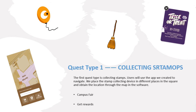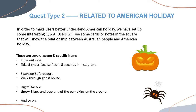Here is Quest Type 1. The first major task of our app is collecting stamps. Users will use the app to navigate, and we place the stamp-collecting devices in different locations around the square. Other coordinates such as restaurants, toilets, and parking are also displayed on the map to facilitate users. After collecting all stamps, users can exchange them for surprise gifts. They can also track the progress of stamp collection, and when a location is completed, the map will display an icon to indicate it has been finished.